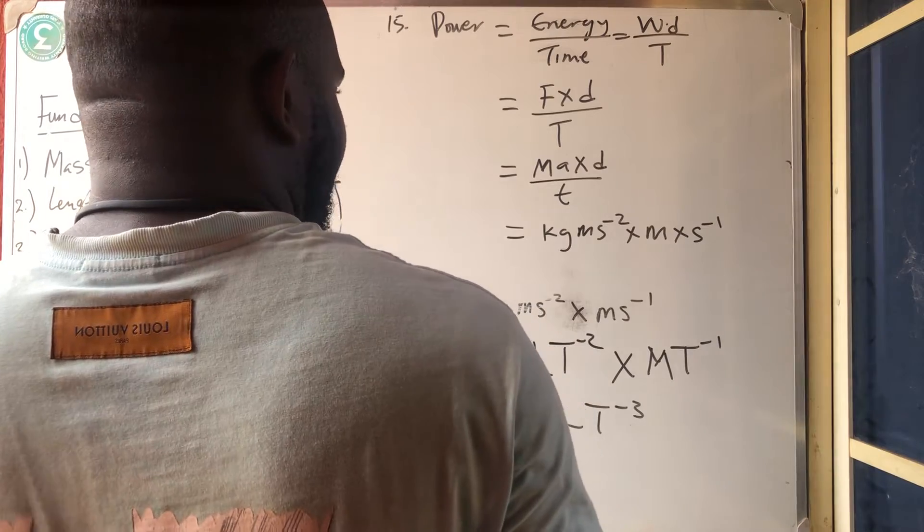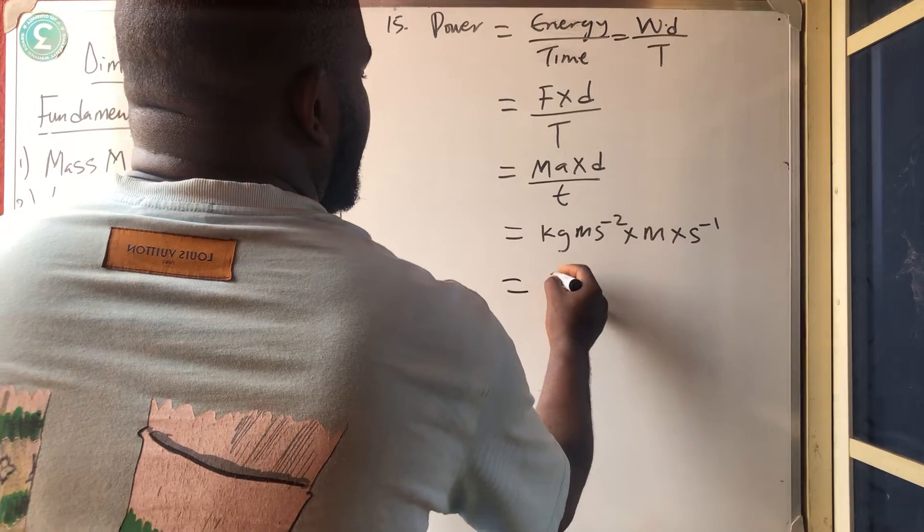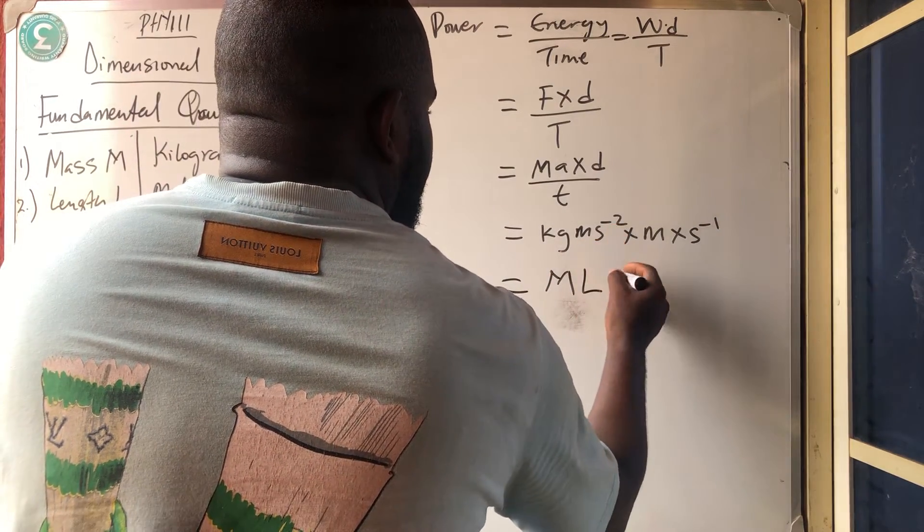Seconds. But why did I put minus 1? Because it is down. Coming up, it will now be minus. So we can now get the dimension. Kilogram is capital letter M. Meters is length. Seconds is time.